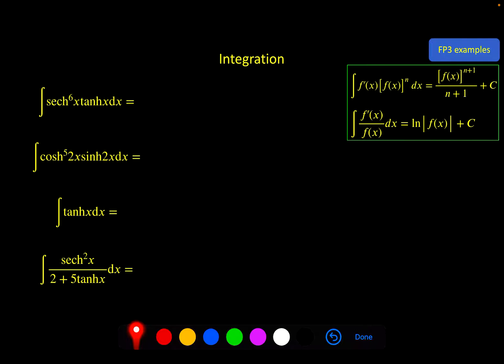Here are some examples of this specifically. So sec to the power 6, tanh to the power 1. Here, what you need to recognize is that sec x tanh x is the derivative of, or very close to the derivative of, sec x, which you can then put with the power 5. So I've split the power 6 here into a single one and the rest of them.